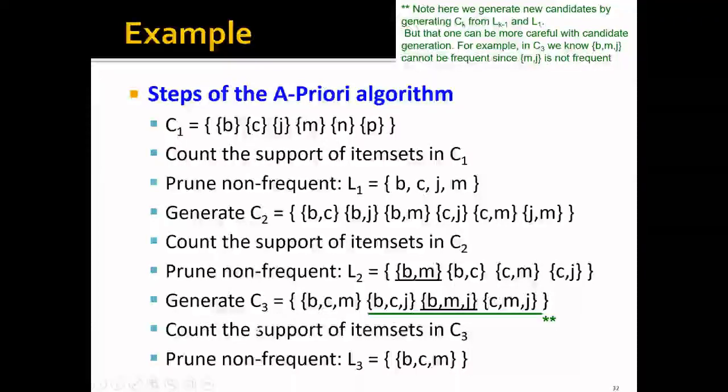But regardless, you will still need to count the support of each item set in C_3 and we'll prune the non-frequent ones and keep only the frequent triples. And that is B, C, and M.